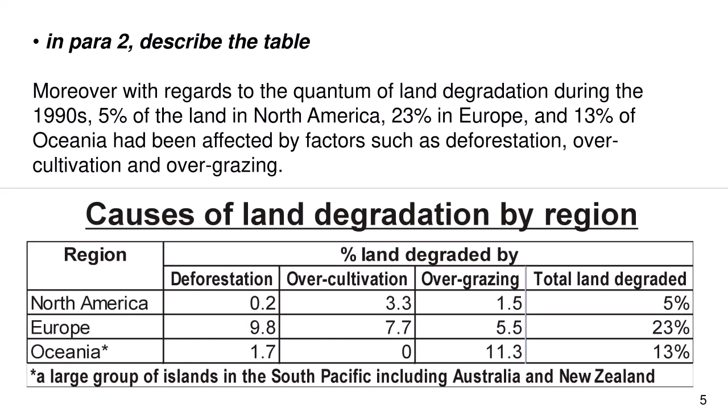Now in paragraph 2, describe the table. Moreover, with regards to the quantum of land degradation during the 1900s, 5% of the land in North America, 23% in Europe, and 13% of Oceania have been affected by factors such as deforestation, overcultivation, and overgrazing.